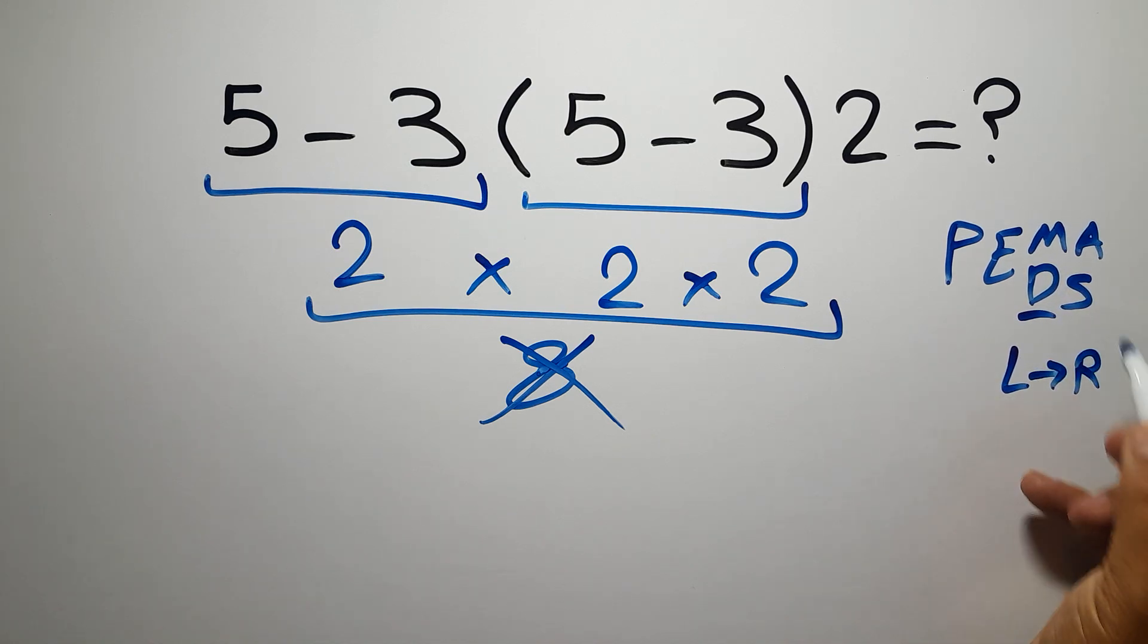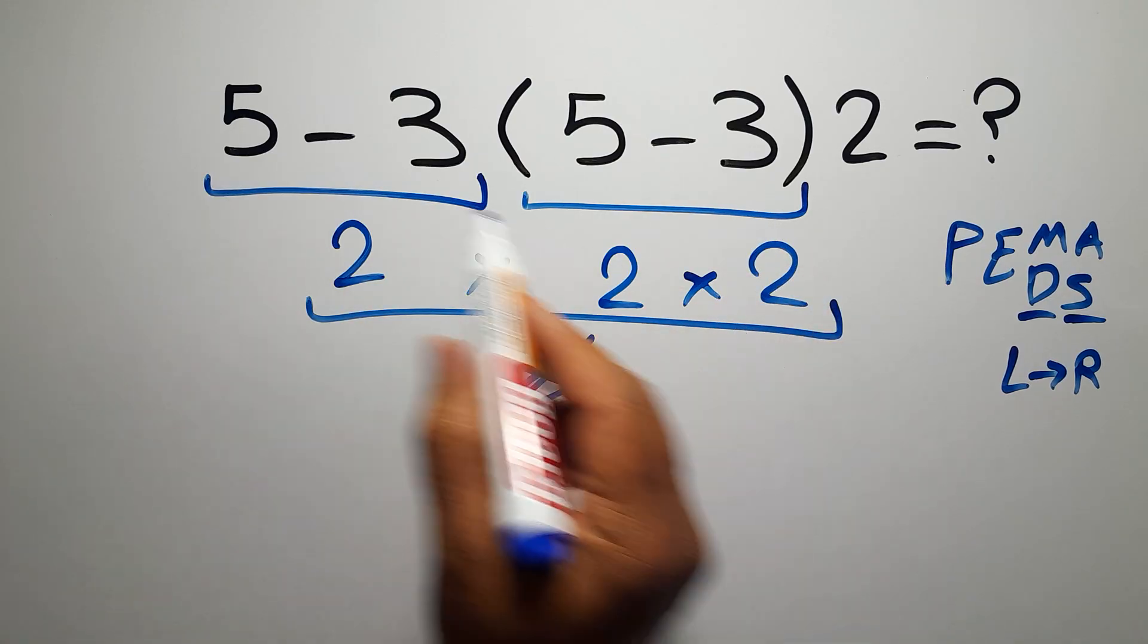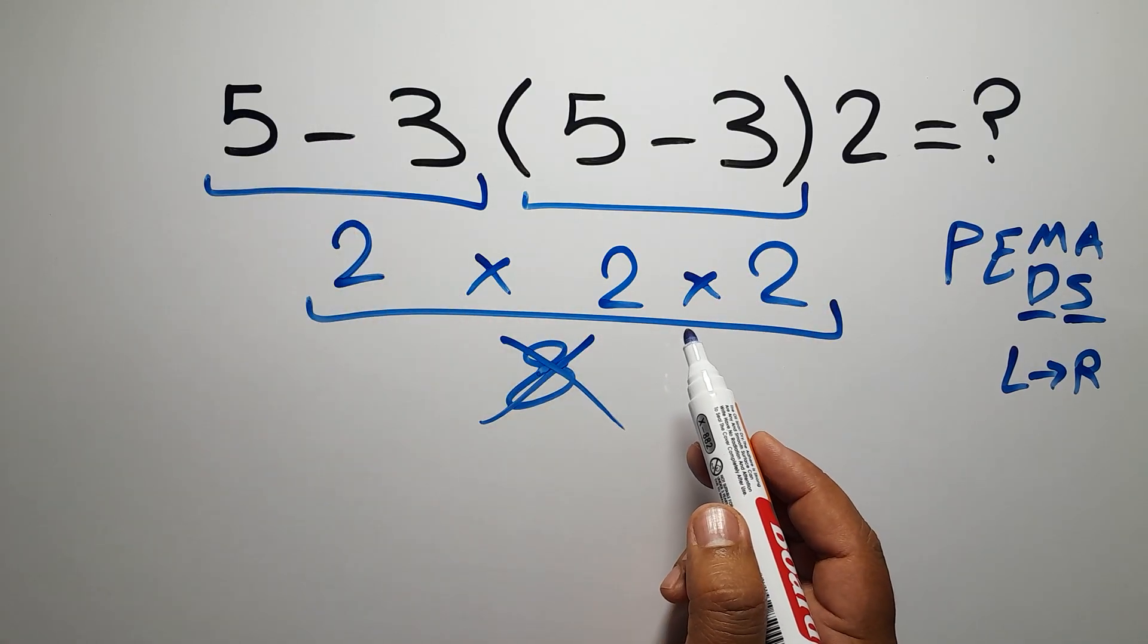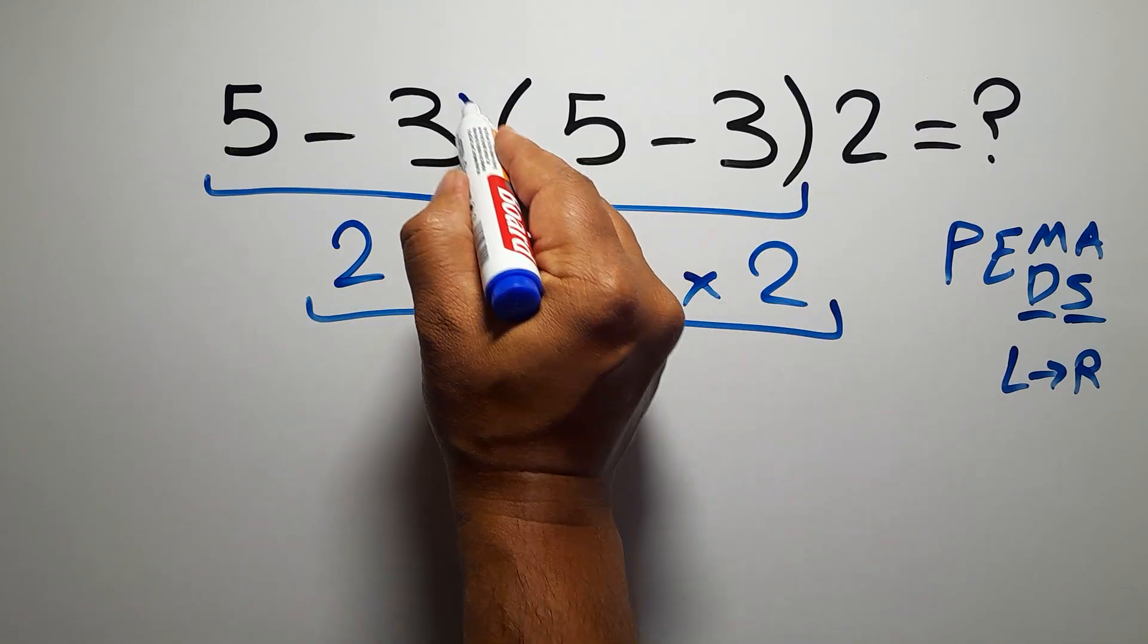In this expression here we have a subtraction, and here and here we have multiplications.